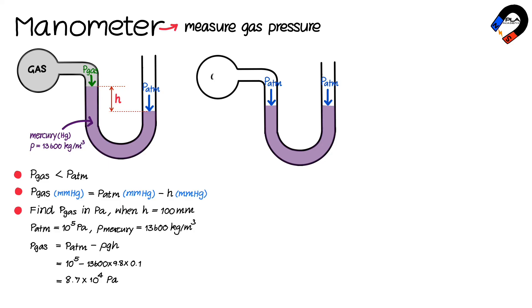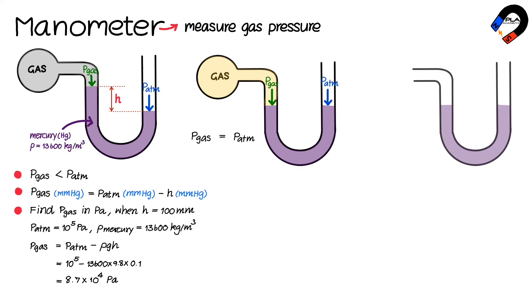it indicates that the gas pressure is equal to the atmospheric pressure. If the mercury level is lower on the left-hand side than on the right-hand side by h millimeters of mercury, this means the pressure of the gas is higher than the atmospheric pressure by h millimeters of mercury.